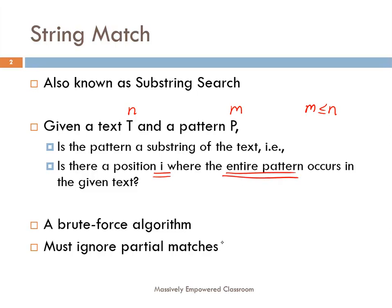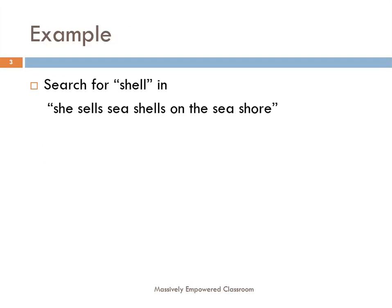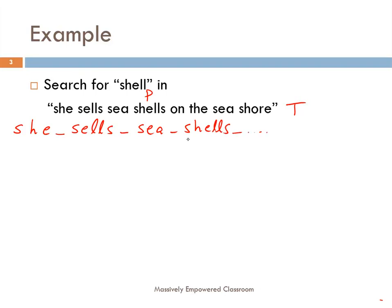A partial match is not a successful search. Let us take this example: the tongue twister 'she sells sea shells on the seashore.' That is the text given to us, and the pattern given to us is 'shell'. We are trying to see if the pattern 'shell' is present in this given string. Let me write the characters in the given text: 'she', a space, 'sells', 'sea', 'shells'. We know that at this point we are going to find a match for 'shell'.